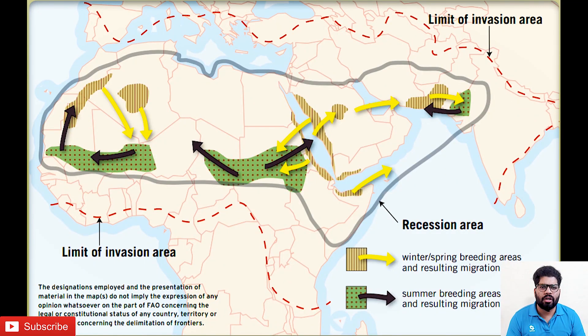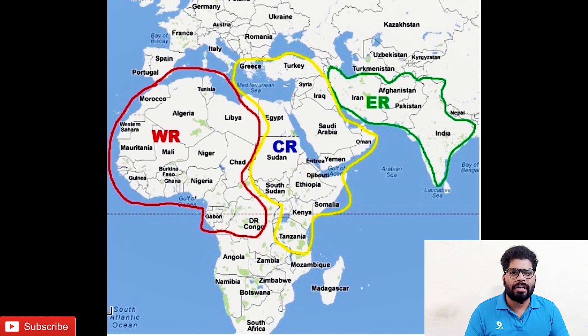Talking about the places where they are distributed: in their calm state they scatter across an area of 16 million square kilometers, from the Sahara Desert to the Middle East to the northwest. But when they become active, they start multiplying and this area increases to 32 million square kilometers, encompassing 60 countries, which is 20 percent of the Earth's area.